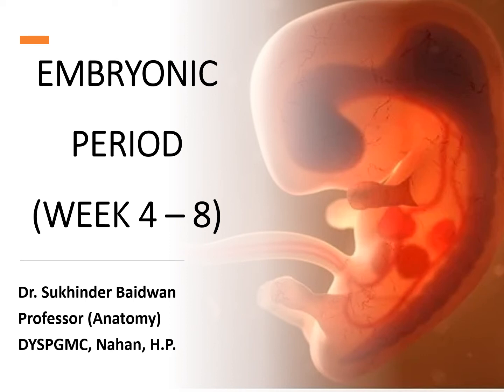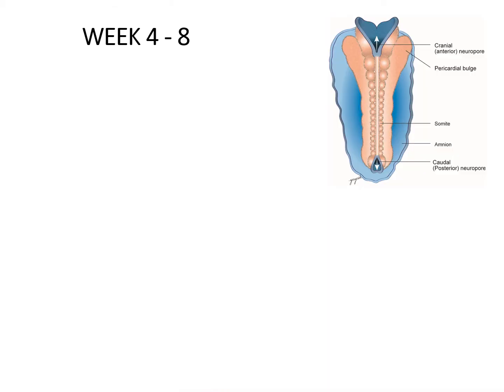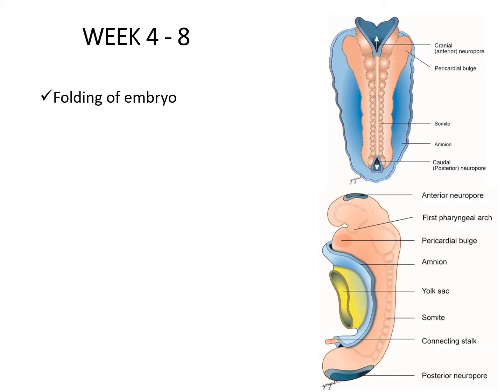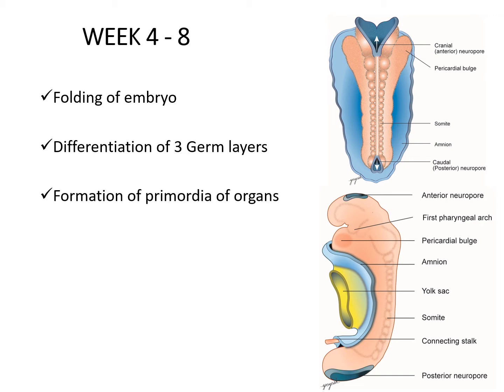The fourth to eighth week of gestation is called the embryonic period. During this period, the major changes are: folding of the embryo, where the flat embryonic disc undergoes folding to acquire the external features of the human form; differentiation of the three germ layers into various tissues and organs; and formation of the primordia of organ systems. By the end of the eighth week, most organ systems have started developing, though their functions may be negligible. Therefore, this period is also called the period of organogenesis.